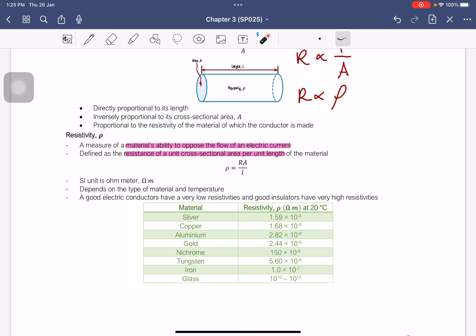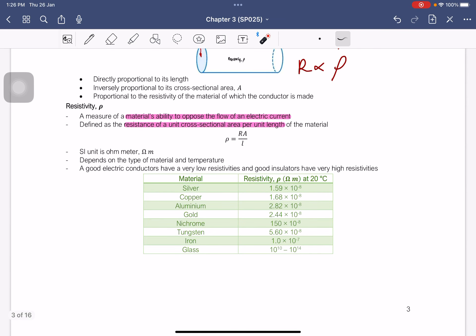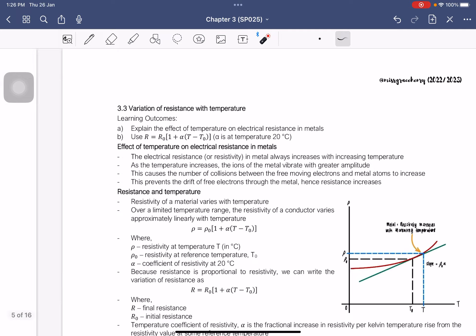So this is the equation for resistivity. It depends on the type of material and the temperature. Good electrical conductors will have very low resistivities. And good insulators will have very high resistivities. So high resistivities means its ability to oppose the flow of an electric current is more efficient. This table is showing you some of the types of materials and its resistivity at 20 degree Celsius. So the temperature is constant. That's basically just the types of materials and its resistivity.